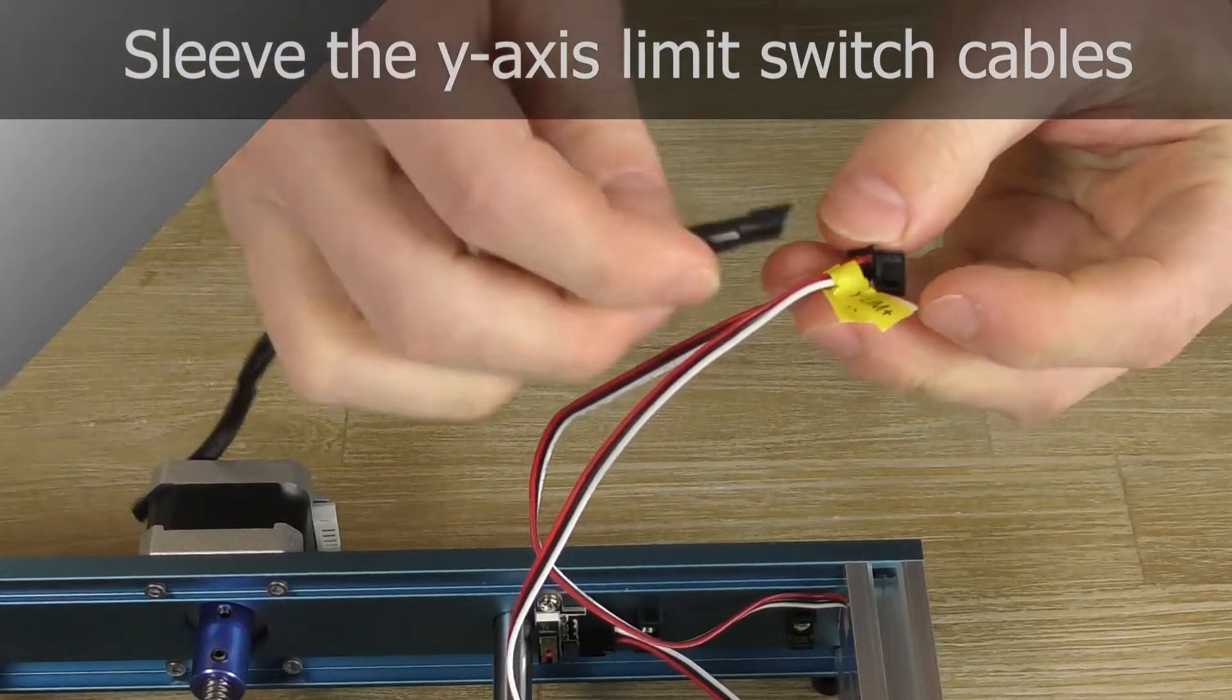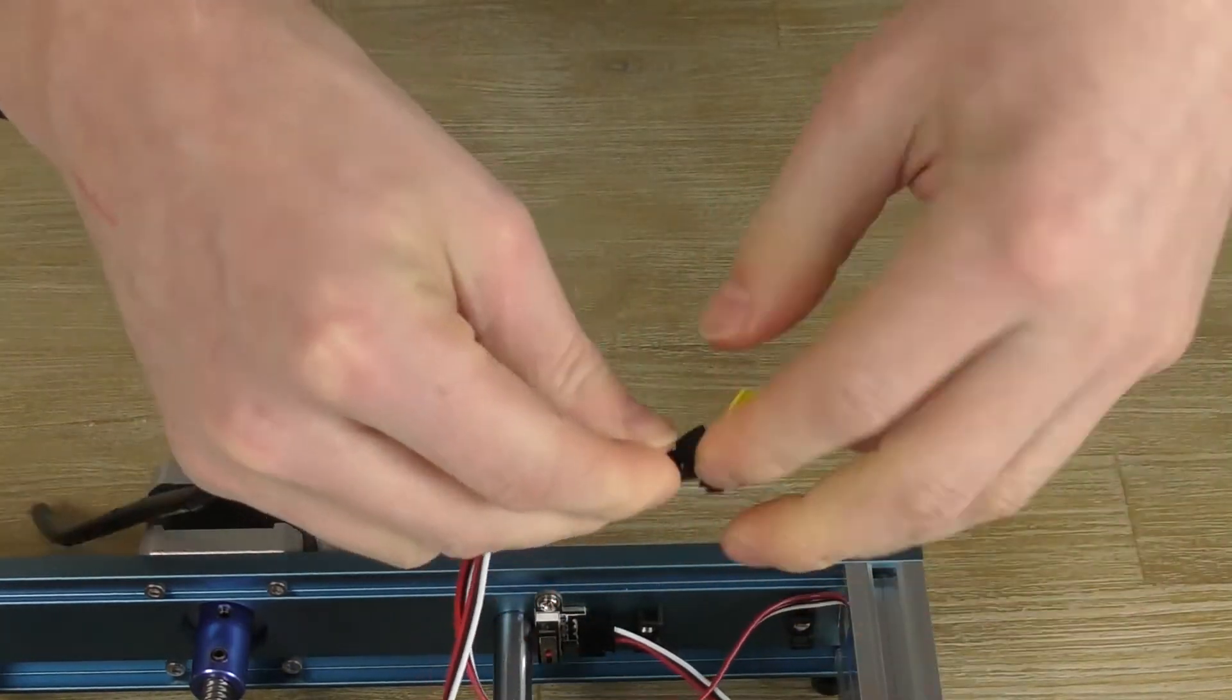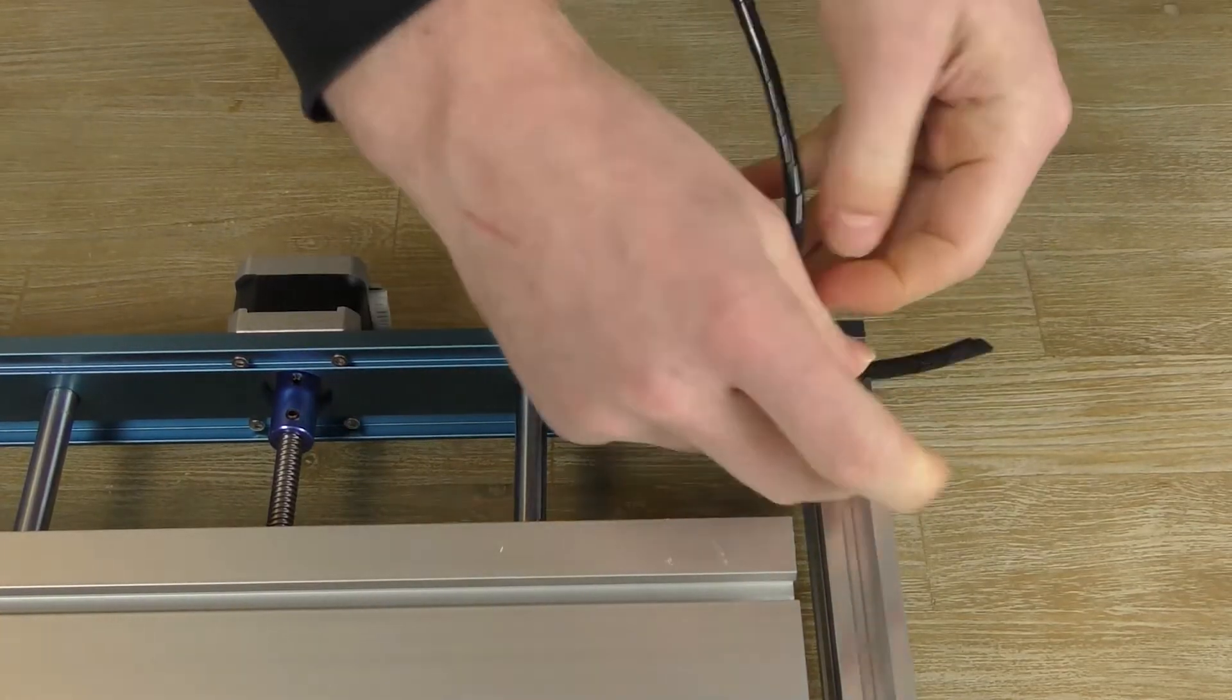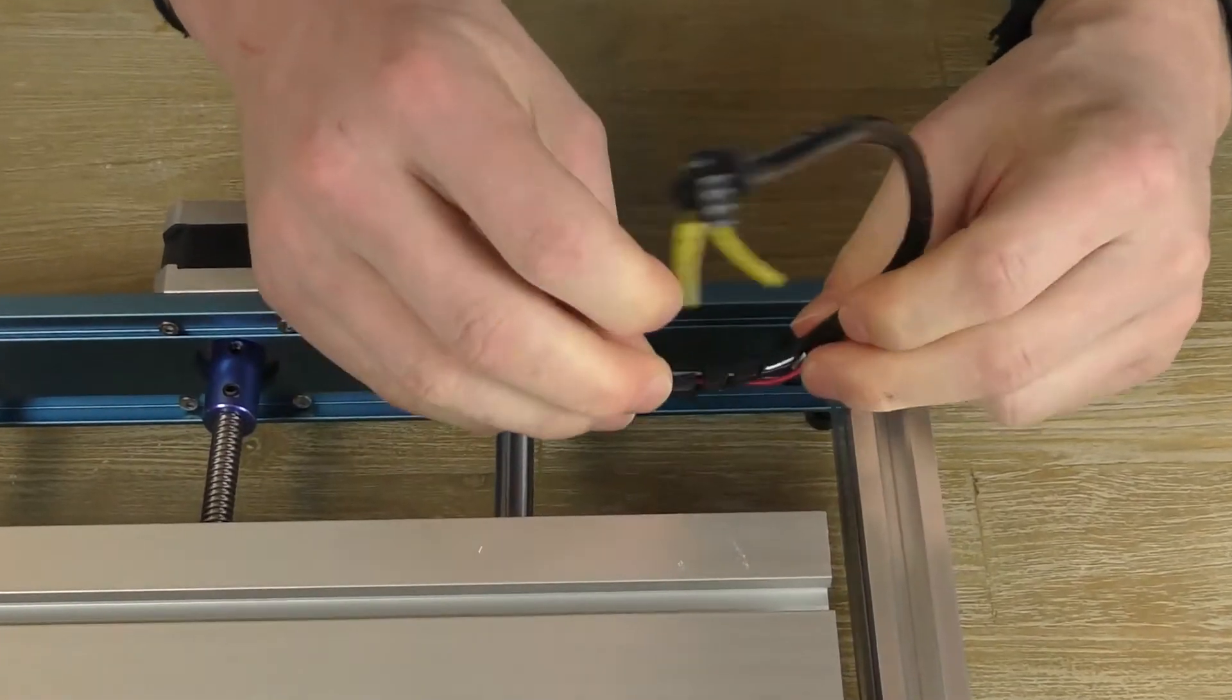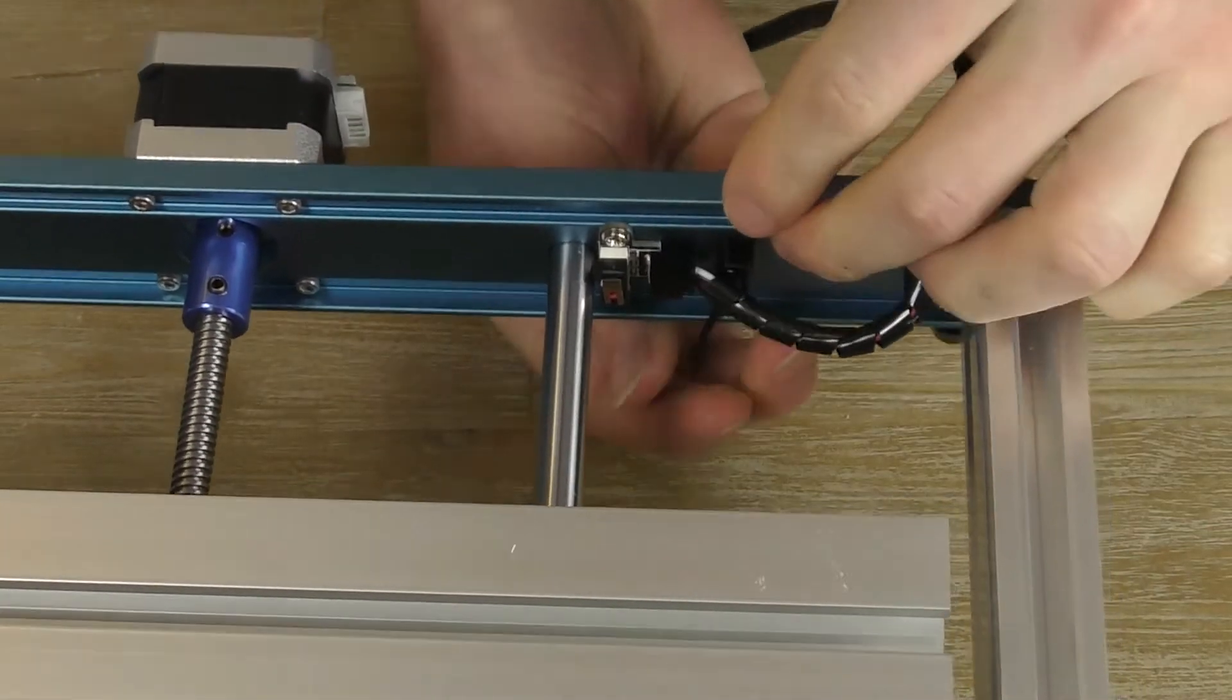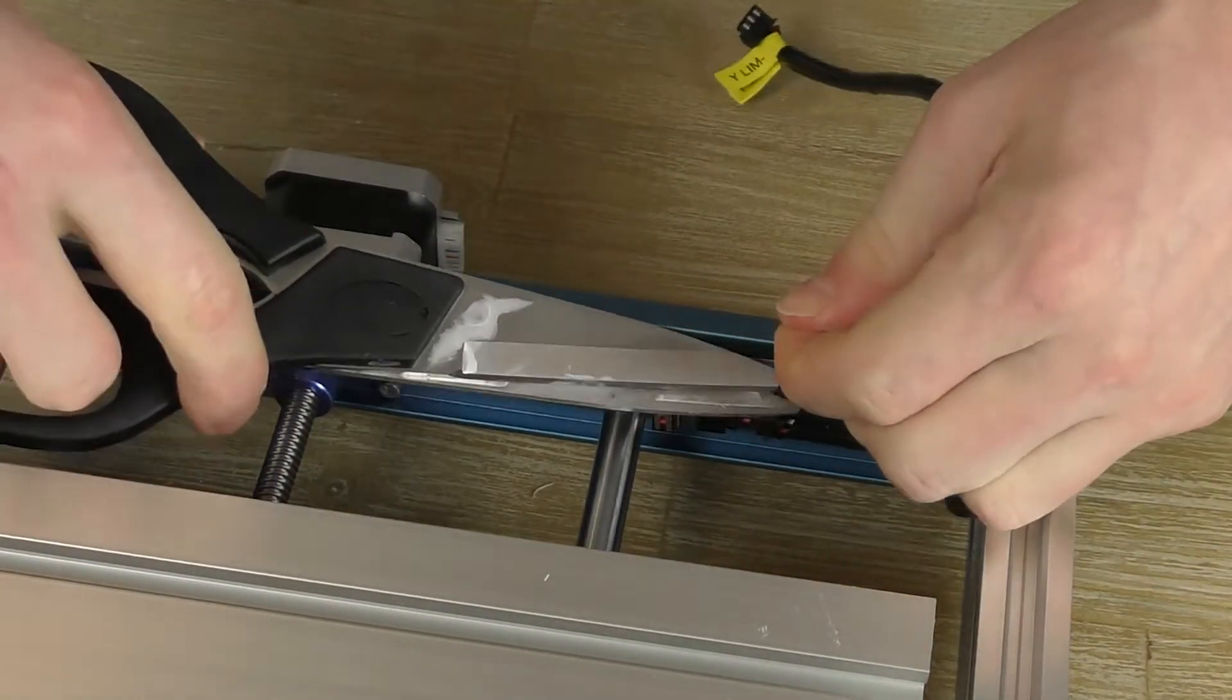Flip the bed and you can sleeve the cables. If your kit came with the spiral sleeve, you can wrap both cables at the same time. When the cables split up again, simply continue wrapping one of the cables. Use two tie wraps to secure the cables to the frame.